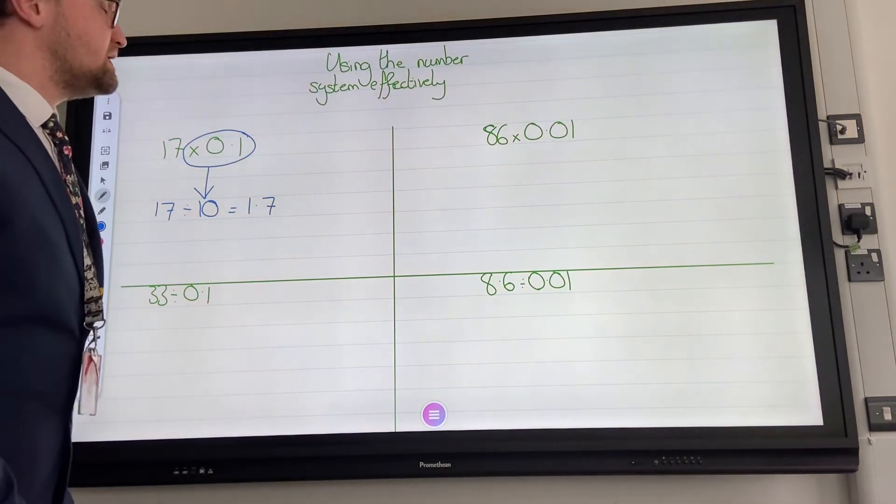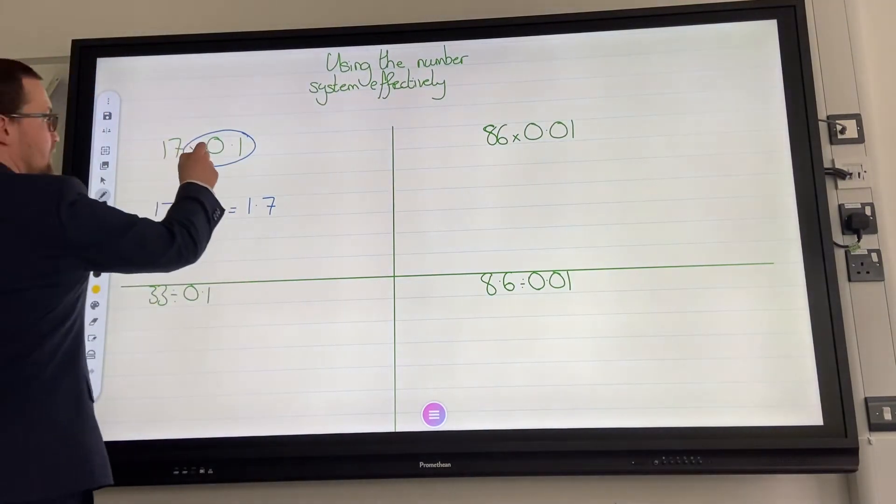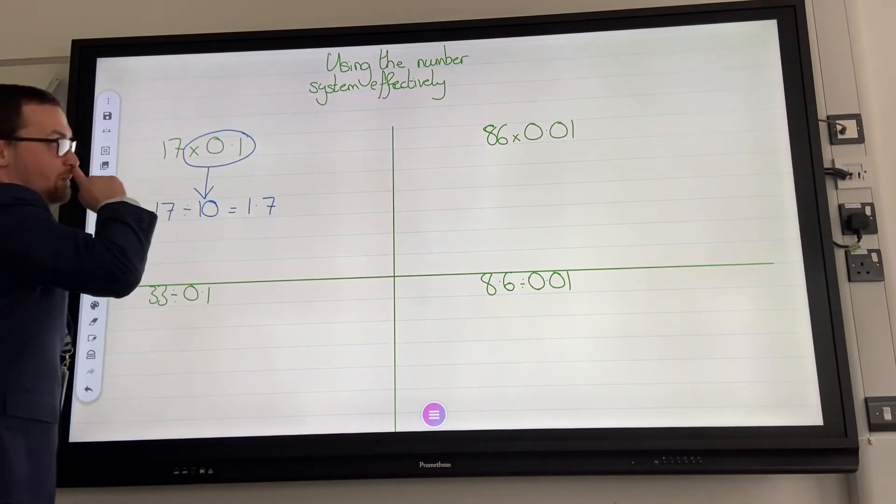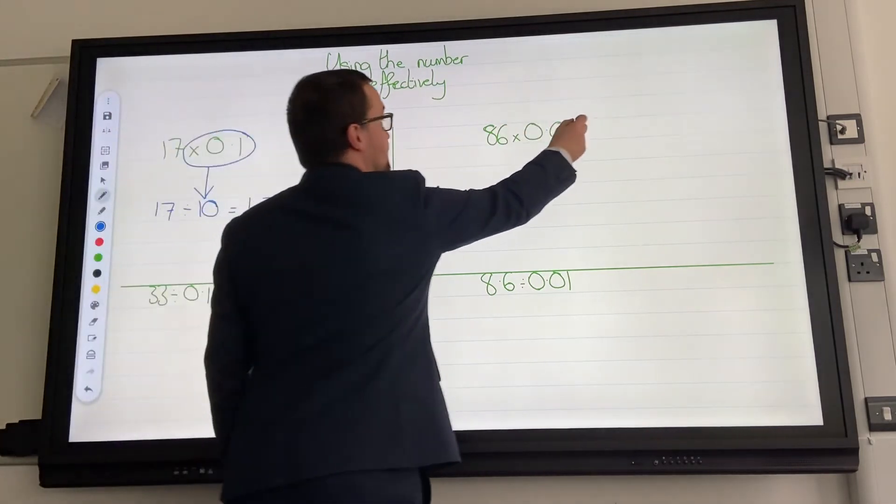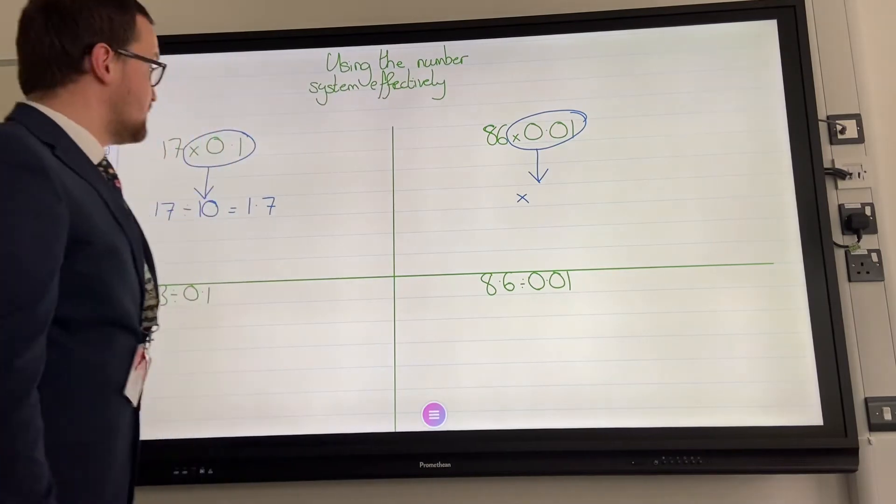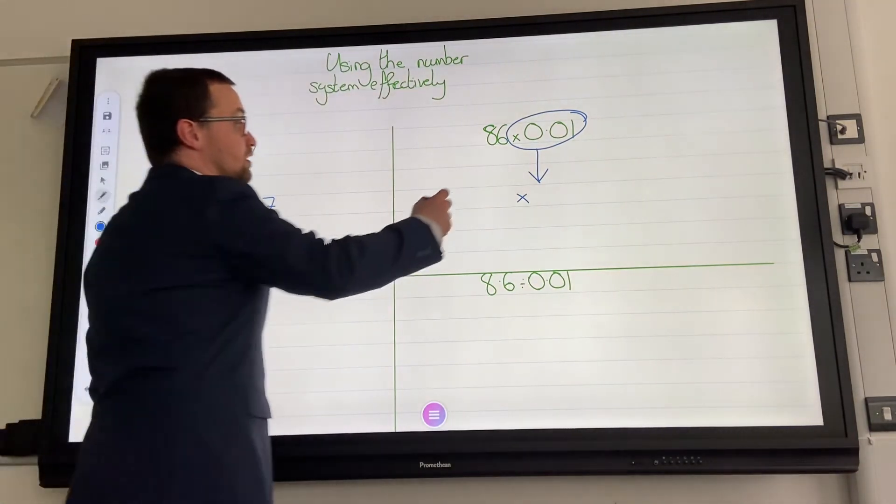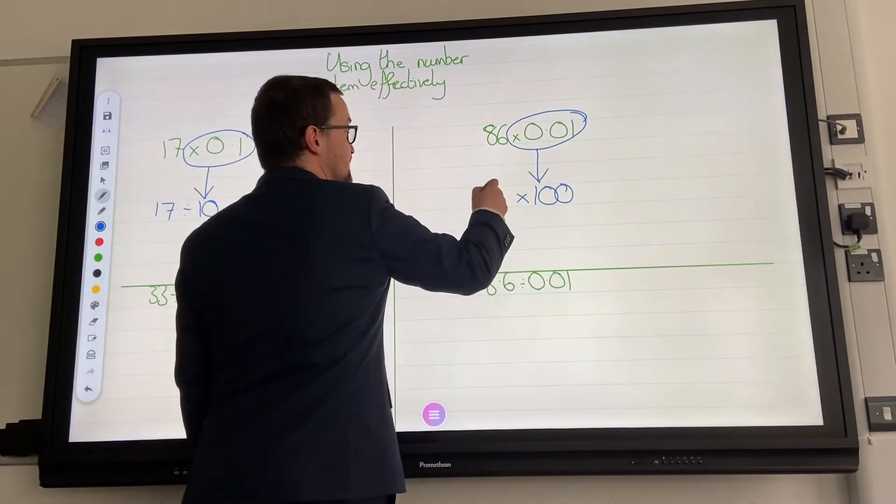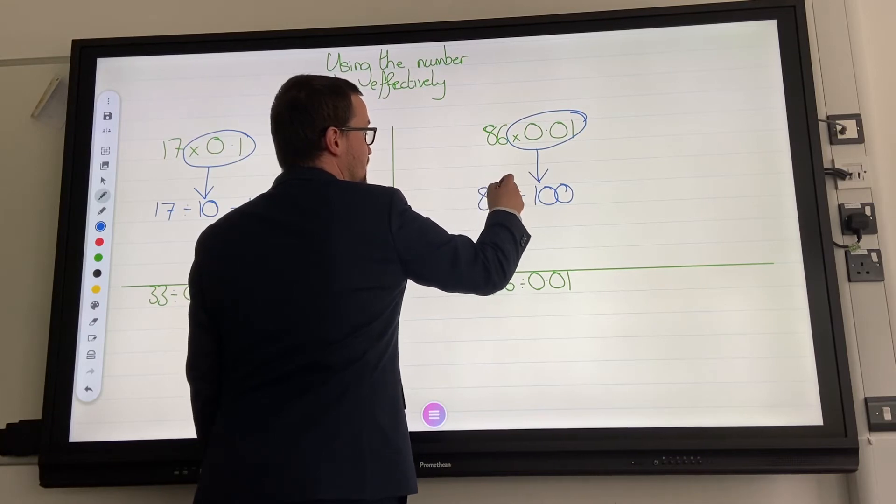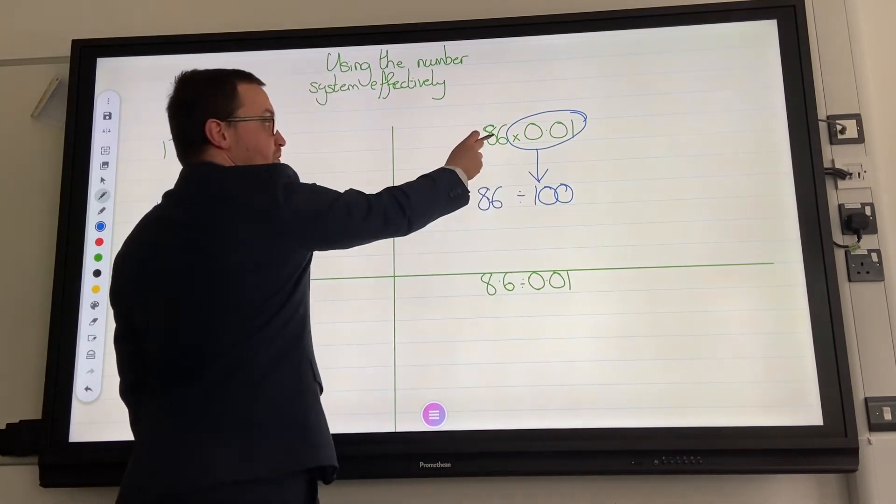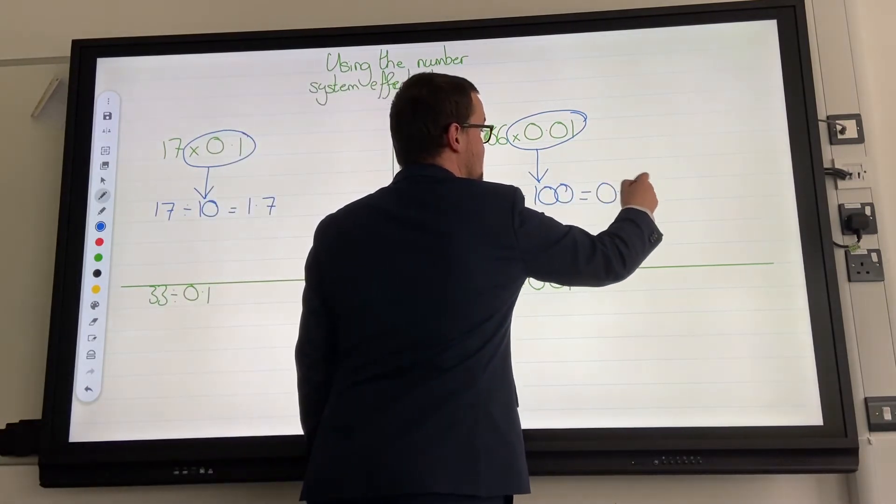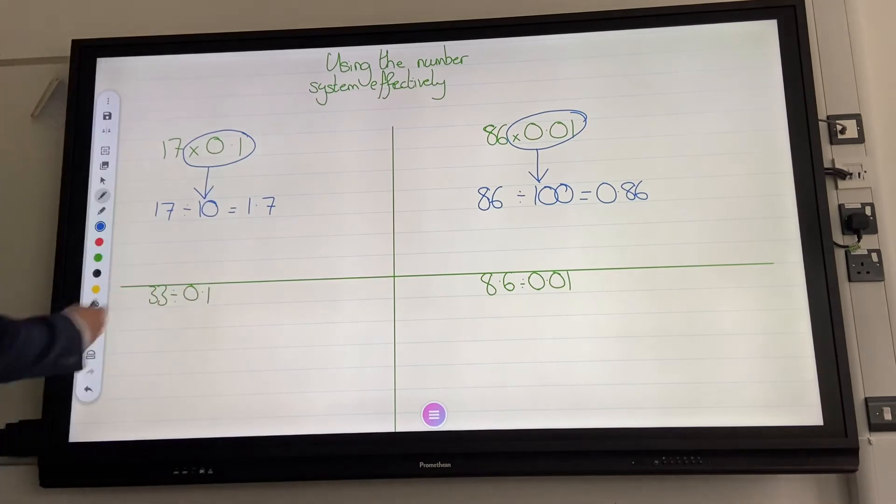86 times 0.01, now look at here. So that number there is 10 times smaller than this one. So, when we flip it, or when we change it, sorry, not flip it, it's going to be times by, what do you reckon? It's going to be times by 100. So, we've actually, no, sorry, it's going to be divide, sorry, it's going to be divide by 100. If you're multiplying by 0.01, you are dividing by 100, so it equals 0.86. If we look down at this bottom one then,